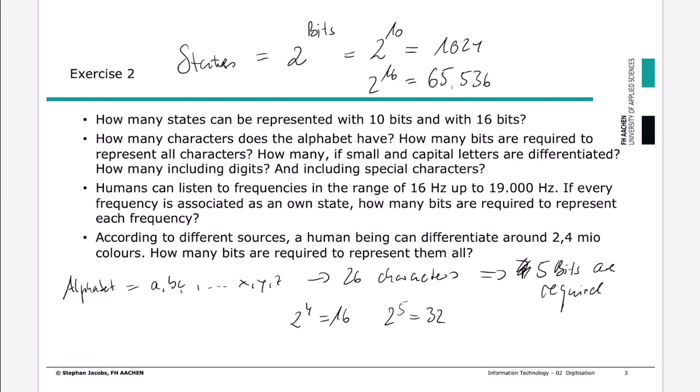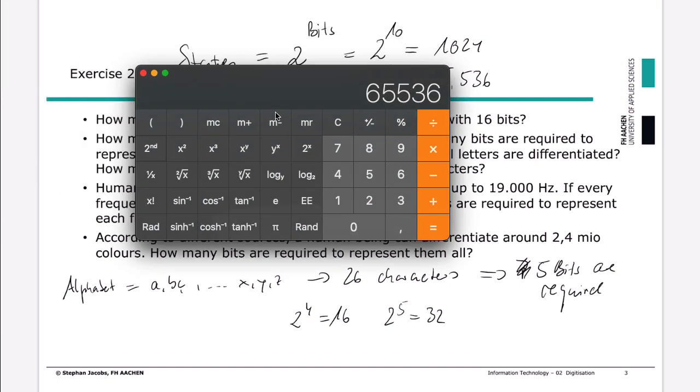If you don't know these numbers, 2 by the power of 4, 2 by the power of 5, of course you can use a calculator again. So go back. And for example, we can type in the 26. And we go to these important logarithms for the basis of 2. So I type it in. You see, I get a value 4.7.